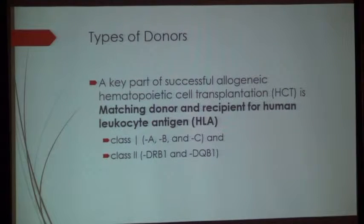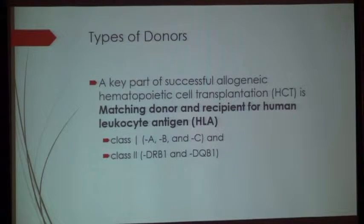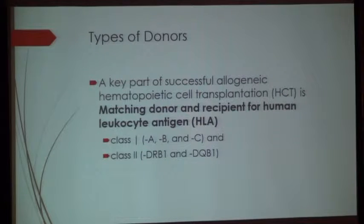A key part in successful allogeneic hematopoietic stem cell transplantation is the presence of a matched donor and recipient, matched for the human leukocyte antigen — the HLA typing. We use class 1: A, B, and C, and class 2: DRB and DRQ. The C locus is not always done for family members because B and C are closely linked on chromosome 6. But for unrelated donors, we should include the C class.